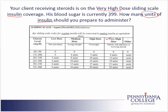We have a current blood sugar of 399. So I look at the glucose level — that's the blood sugar level — and 399 would be in this range. I follow over to the very high dose column and I see that I should give 25 units. So the answer to this question is 25 units.